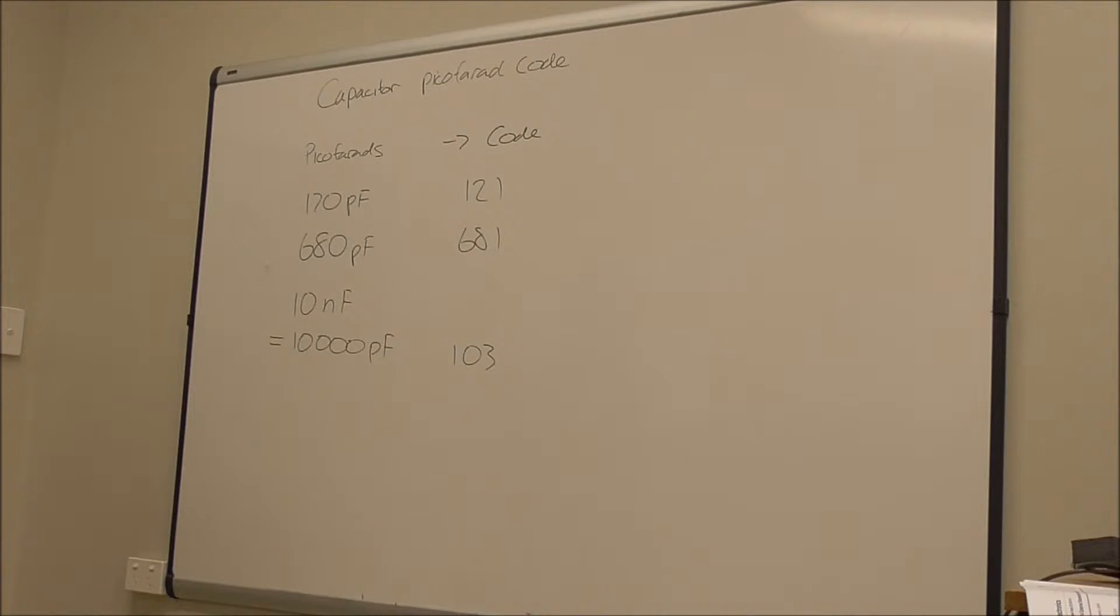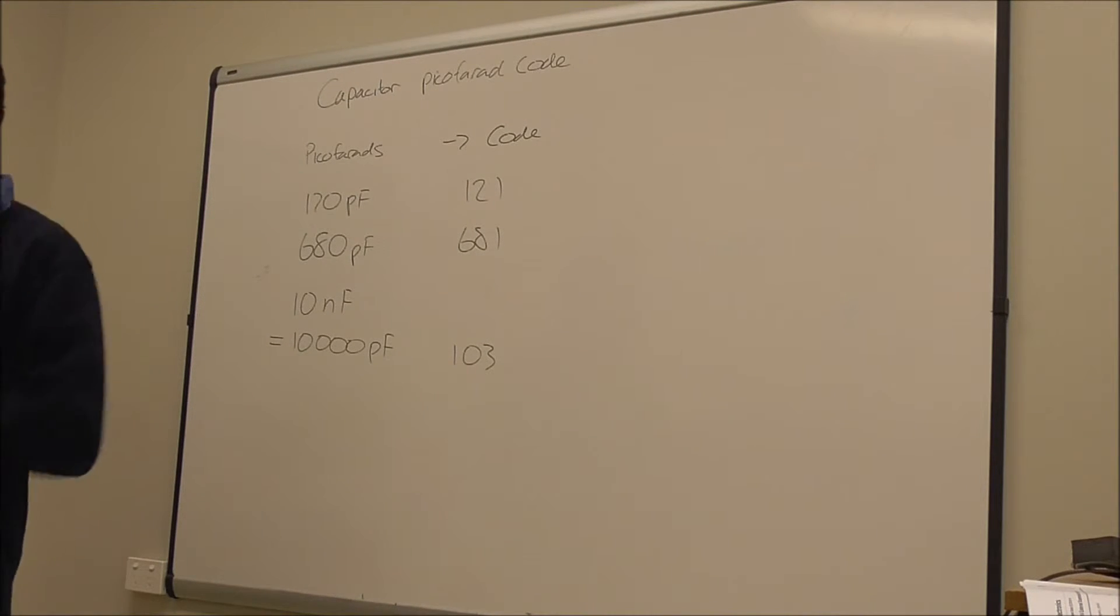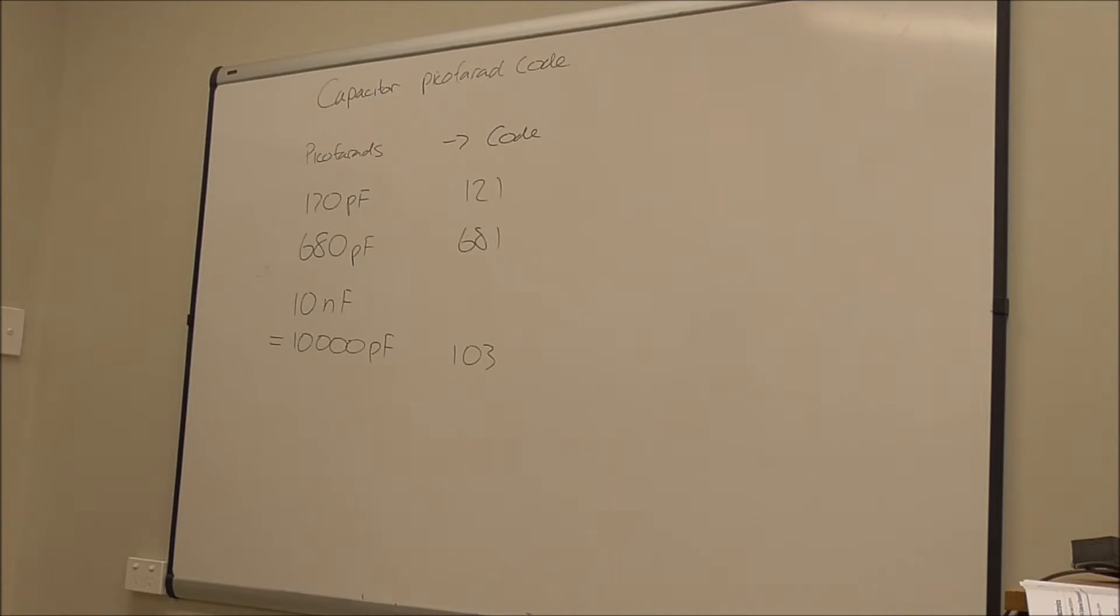But not in the E12 series. The E12 series only has 12 discrete values, and it's all written on your formula sheet, so there's 10, then 12, then 15, then 18, 22, and so on.